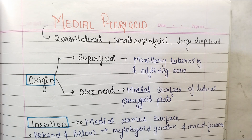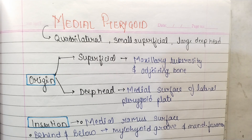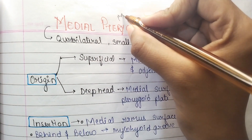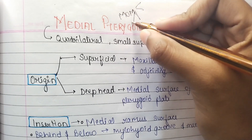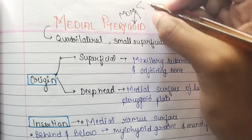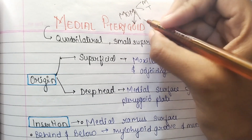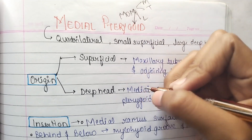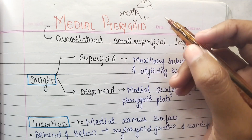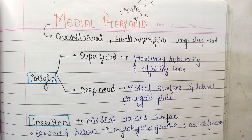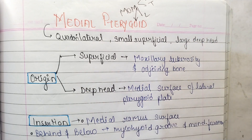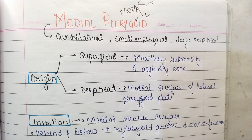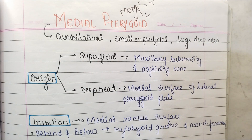The medial pterygoid is one of the muscles of mastication. We have four muscles of mastication. We have already discussed about the masseter, temporalis, and the lateral pterygoid. In this video we are going to discuss about the medial pterygoid.